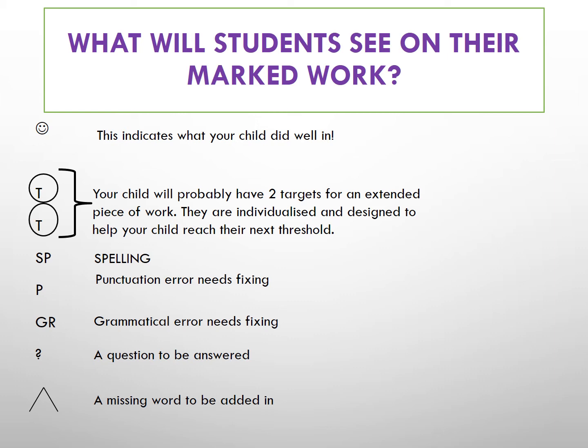The smiley face indicates what your child did well in. The T stands for target — your child will probably have two targets for an extended piece of work, which are individualised and designed to help them reach their next threshold. SP stands for spelling, P for punctuation, GR for grammar, a question mark means there is a question that needs to be answered, and the upwards arrow indicates a missing word that they need to add in.